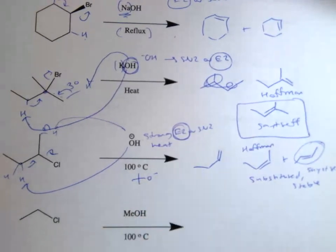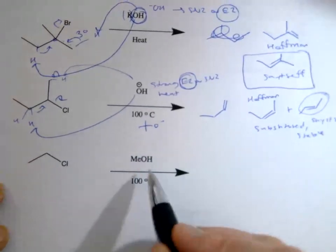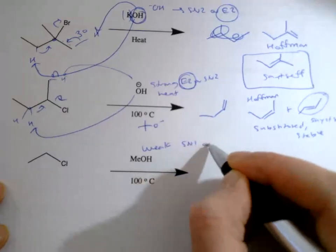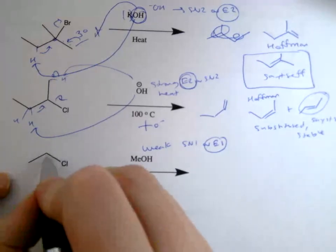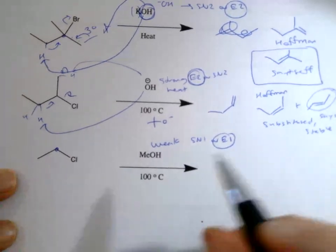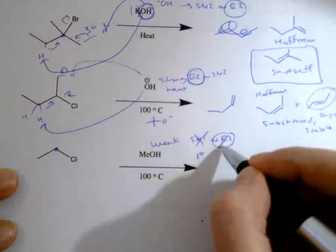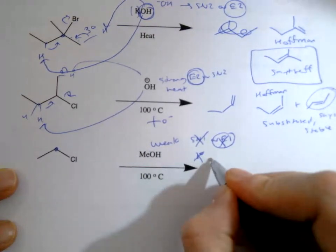Then this at the bottom, we have methanol. This is a weak nucleophile, so again it goes SN1 or E1. With heat, we think it would favor E1, but I'm just going to check over here and see that this is a primary leaving group. If it's a primary leaving group, it can't go SN1 or E1.